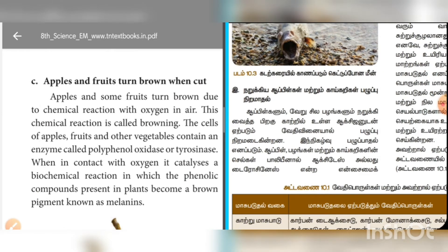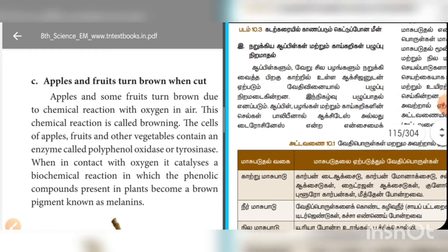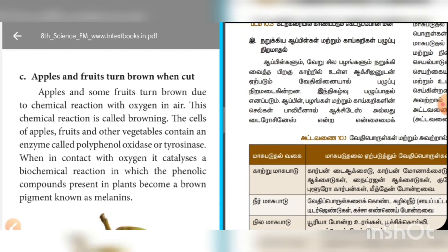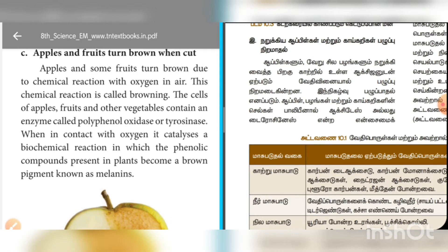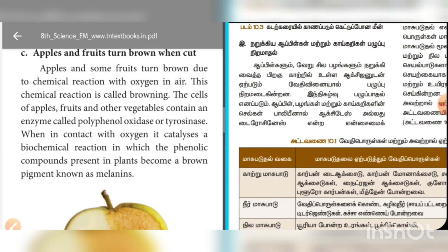Apples and fruits turn brown when cut, due to chemical reactions with oxygen in the air. This chemical reaction is called browning. The cells of apples, fruits, and other vegetables contain an enzyme called polyphenol oxidase or tyrosinase. When in contact with oxygen, it catalyses a biochemical reaction in which the phenolic compounds present in plants become a brown pigment known as melanin.